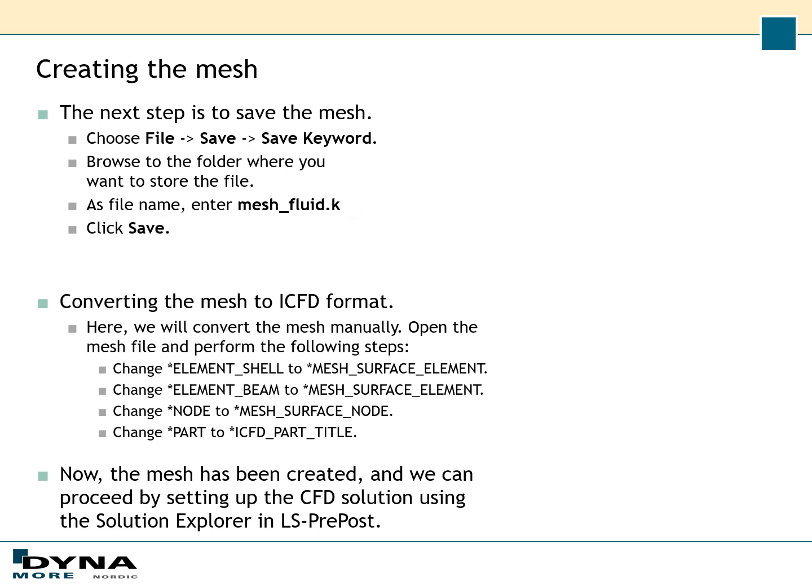Now the mesh is ready, so we save it as mesh_fluid. The next step is to convert the mesh to the ICFD format, which means we just need to change the names of a few keywords. Open the mesh file and change element_shell to mesh_surface_element, element_beam to mesh_surface_element, node to mesh_surface_node, and part to ICFD_part_title. When this has been done the mesh is ready and we can proceed to set up the CFD solution using the Solution Explorer in LS-PrePost.